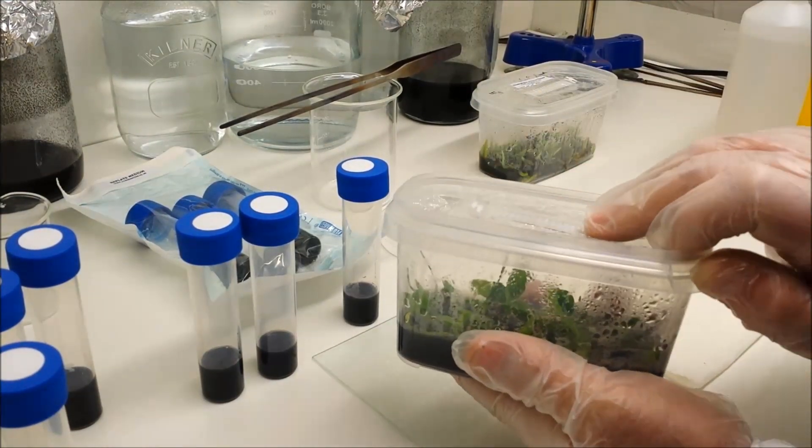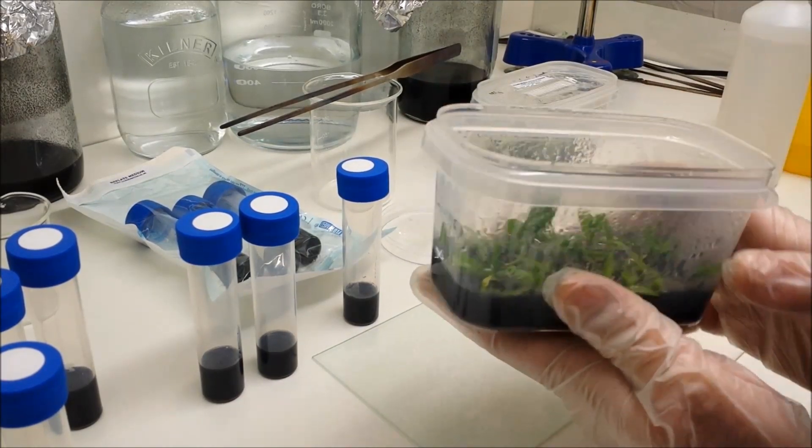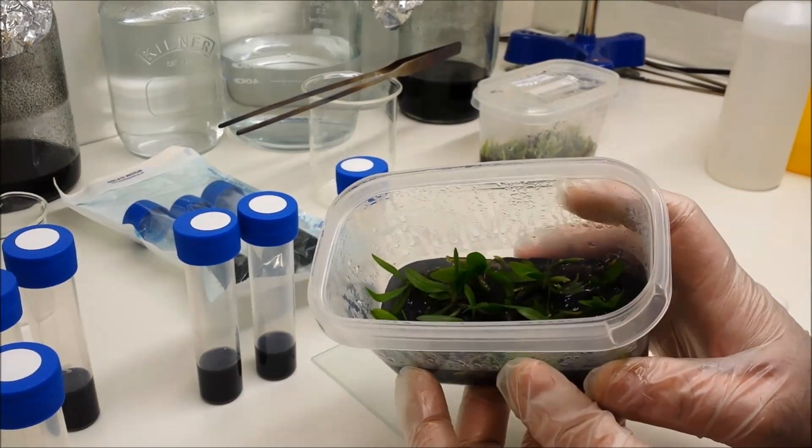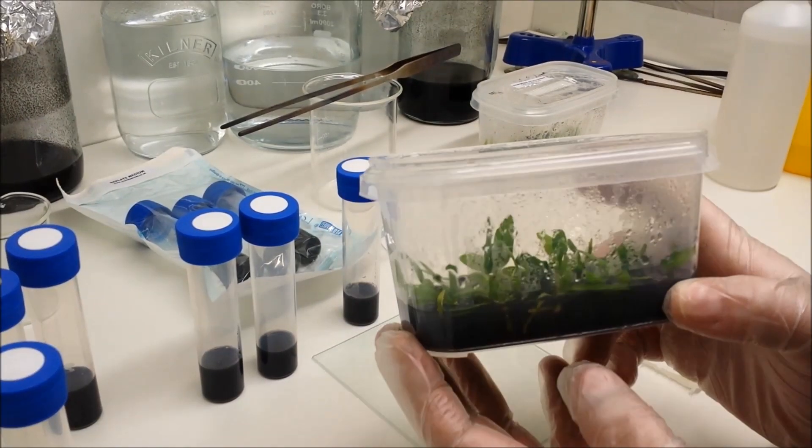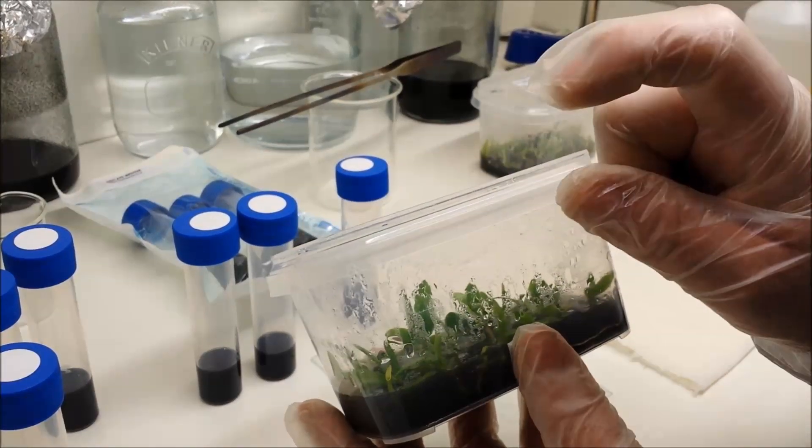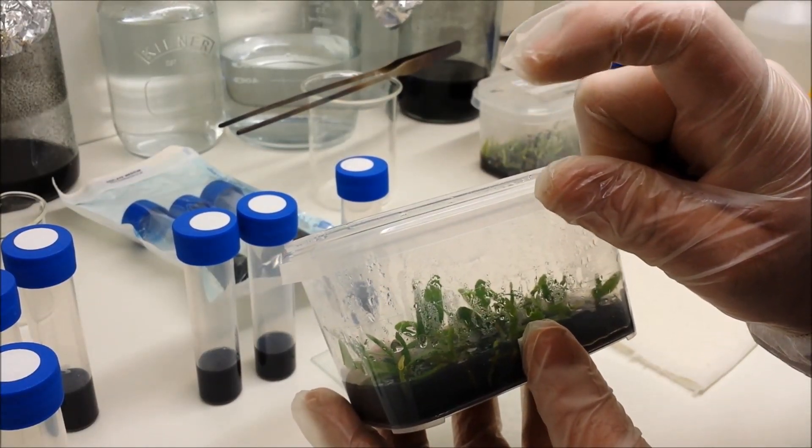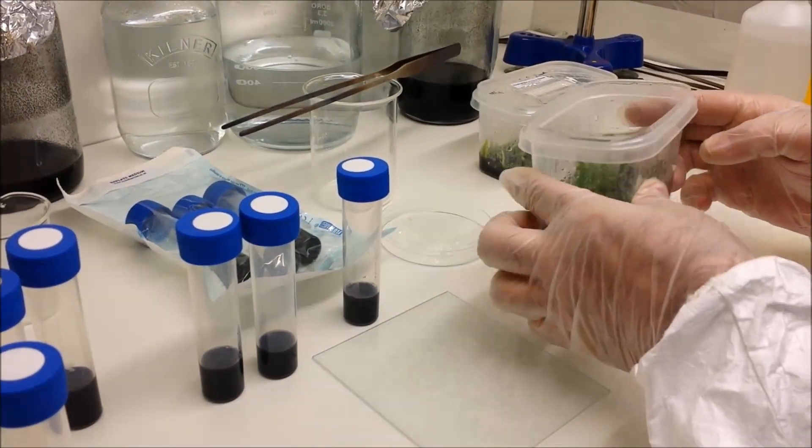The first one we're going to do is Aerangis decaryana, which is a lovely fragrant flower from Madagascar. These plants are around about an inch high—you'll probably see better from the side. So you want to wait until they're around about that high, about an inch, before you want to consider replating.